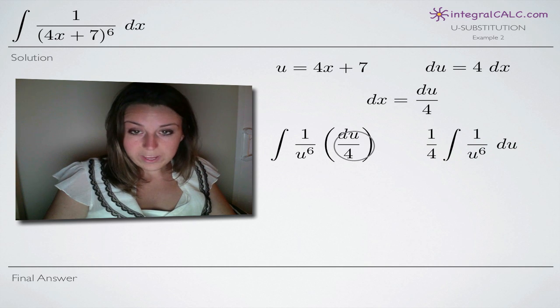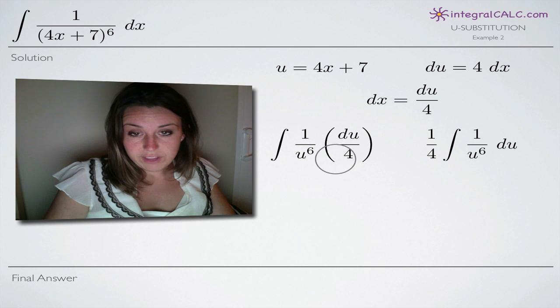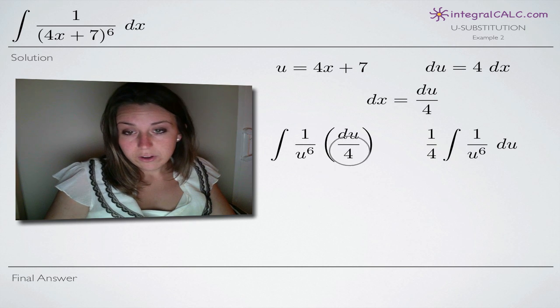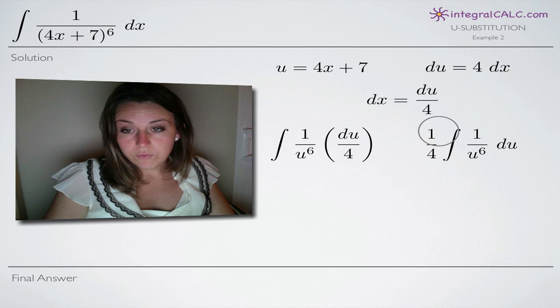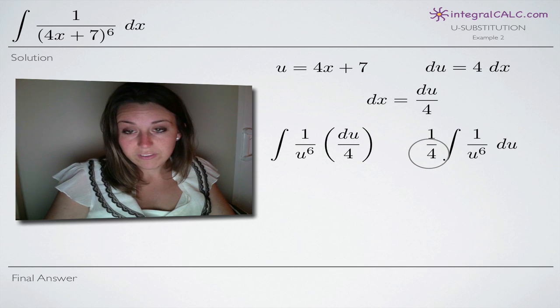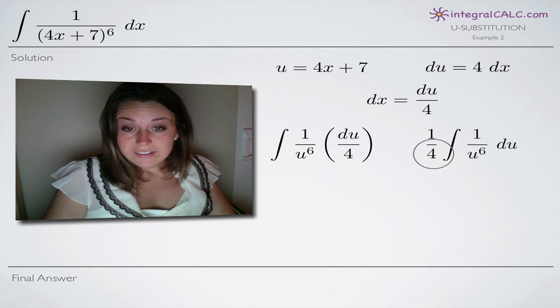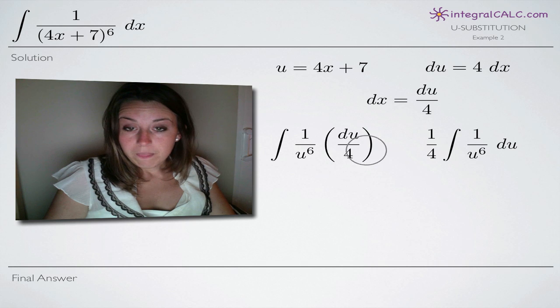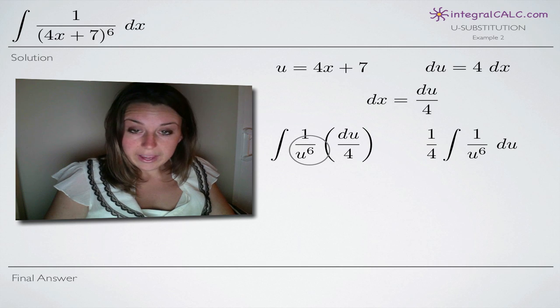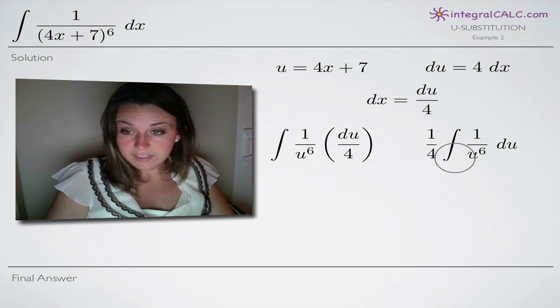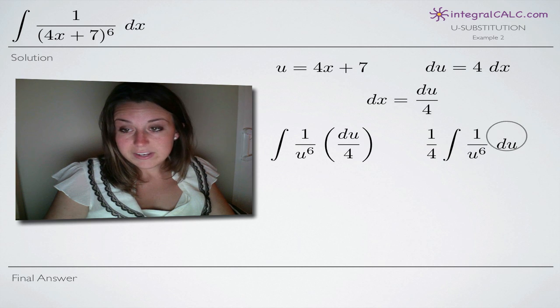We can bring this 1 fourth out in front of the integral. We have a 1 in the numerator and a 4 in the denominator. We can grab that 1 fourth and it comes out here in front of the integral which just leaves us with 1 in the numerator and u to the 6th in the denominator and of course du.